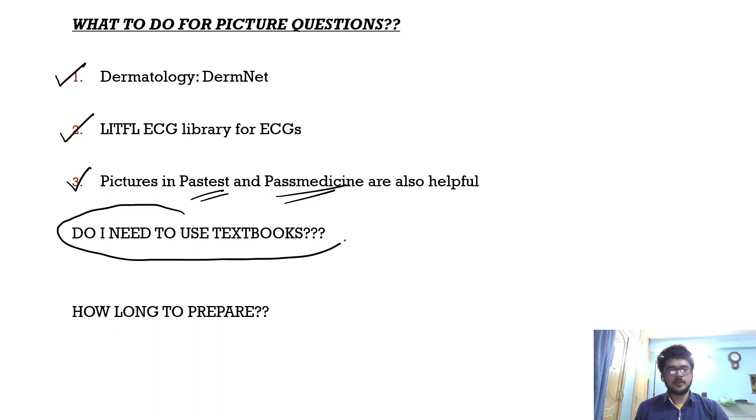A very important question many people ask me: do I need to use textbooks? My personal recommendation is no. Textbooks are going to eat your time and consume a huge part of your preparation. If you have worked out Passmedicine and Pastest properly even once, it's more than enough to clear the exam. Textbooks are going to eat your time - I don't think it's very useful for this exam. How long to prepare? Optimally three to four months are enough, but if your Part 1 preparation is solid, around two to three months is more than enough.